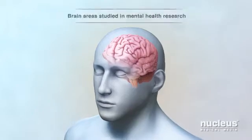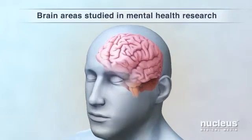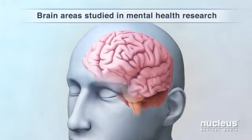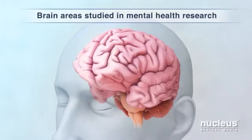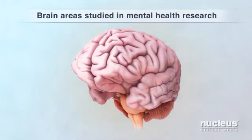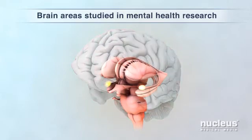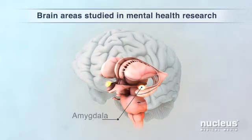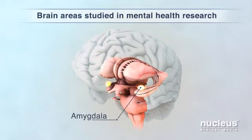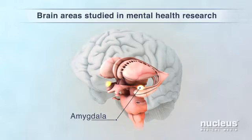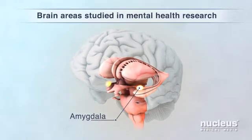Scientists study how certain brain areas affect mental health. For example, the fear area of the brain, called the amygdala, helps you avoid harmful things and escape danger.